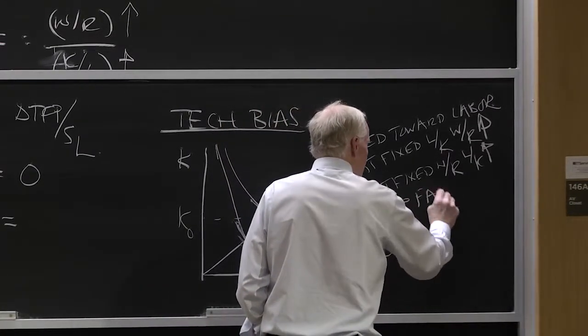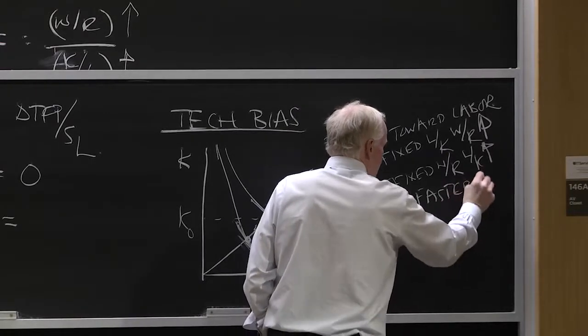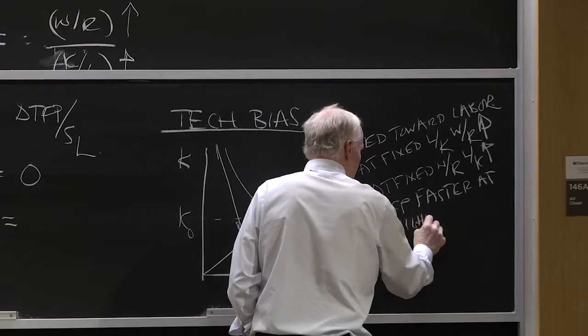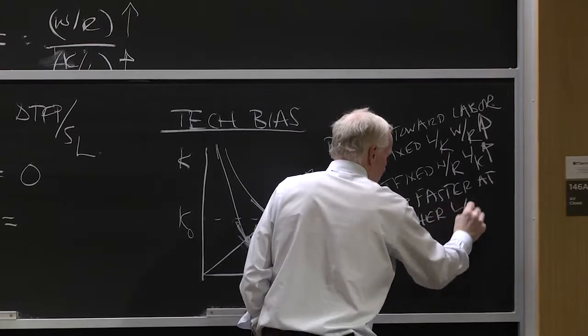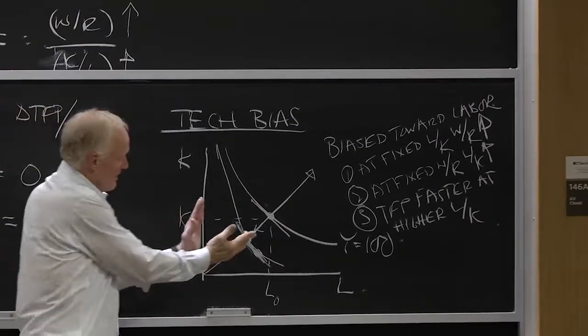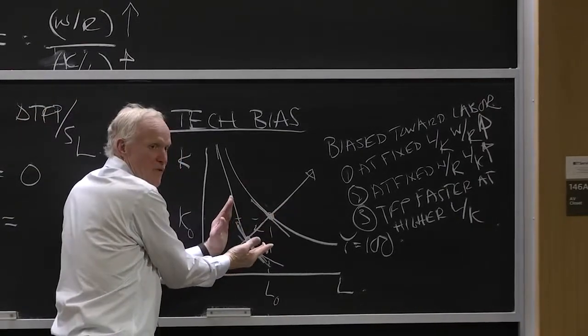And number three, TFP faster at higher L over K. In fact, that's what's causing this isoquant to twist. That is, why is the isoquant twisting?